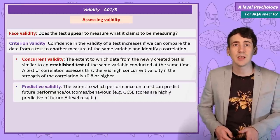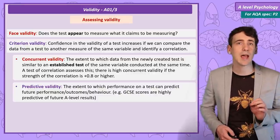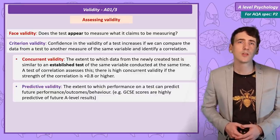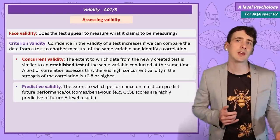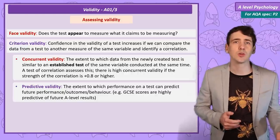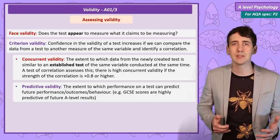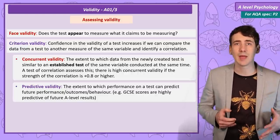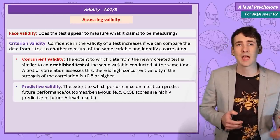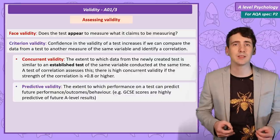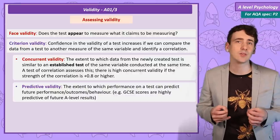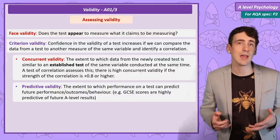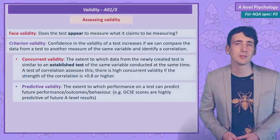Predictive validity is when we are able to give an accurate prediction based on the results of the measure. For example, GCSE results have good predictive validity for A level performance, and universities assume A level results have good predictive validity for students' ability to perform at degree level — which is why they set A level entry requirements.